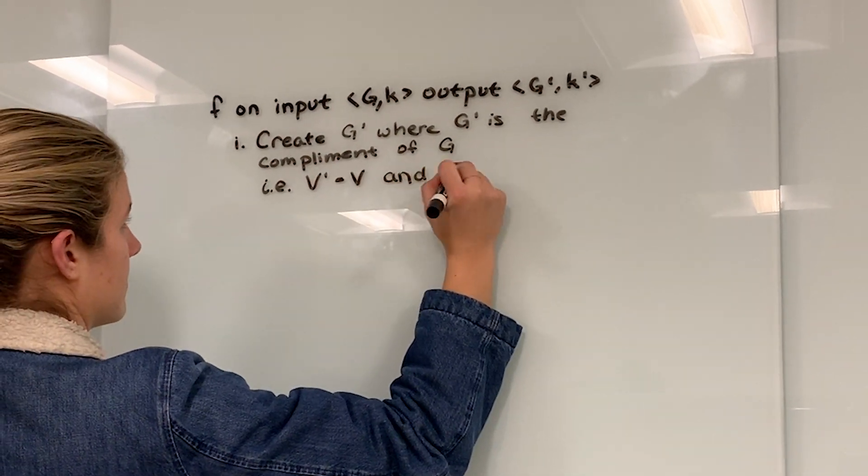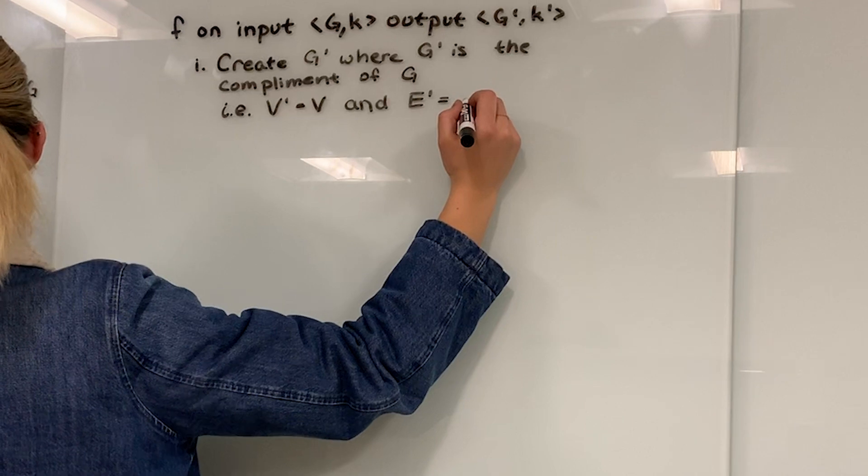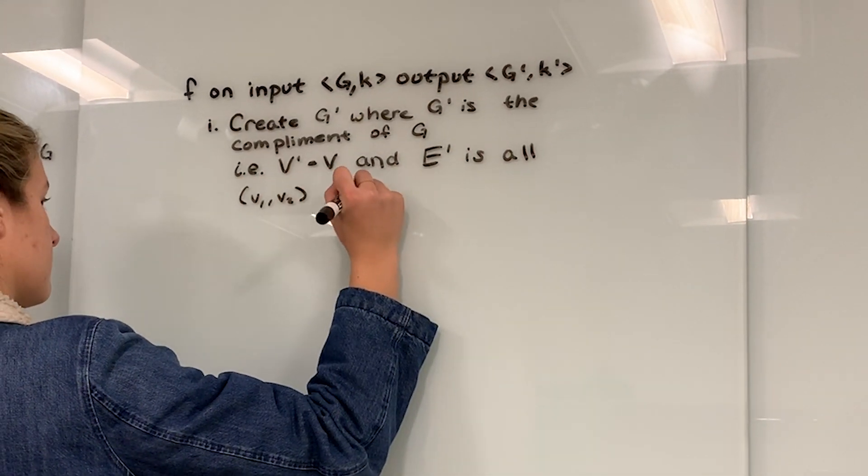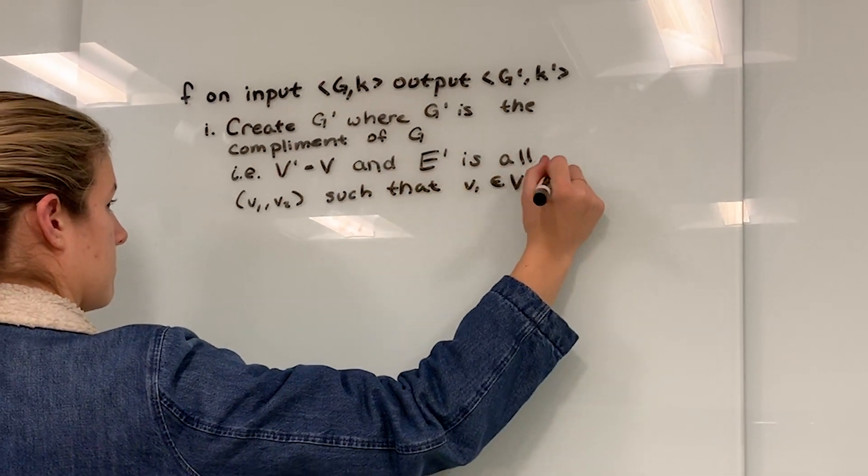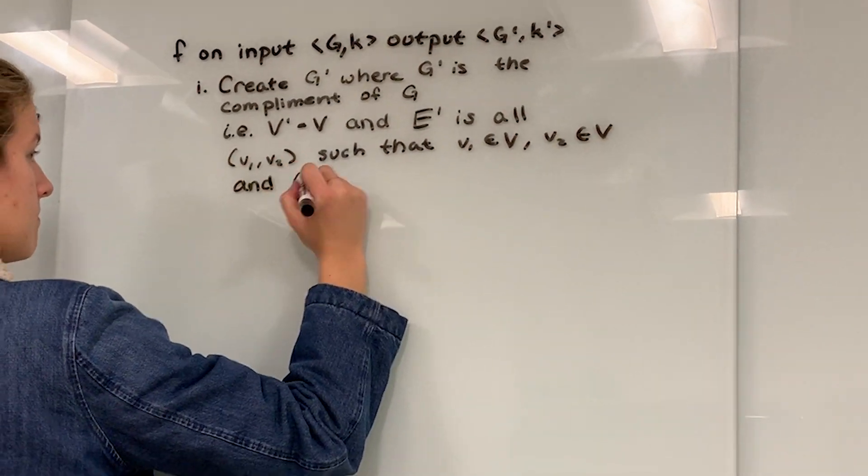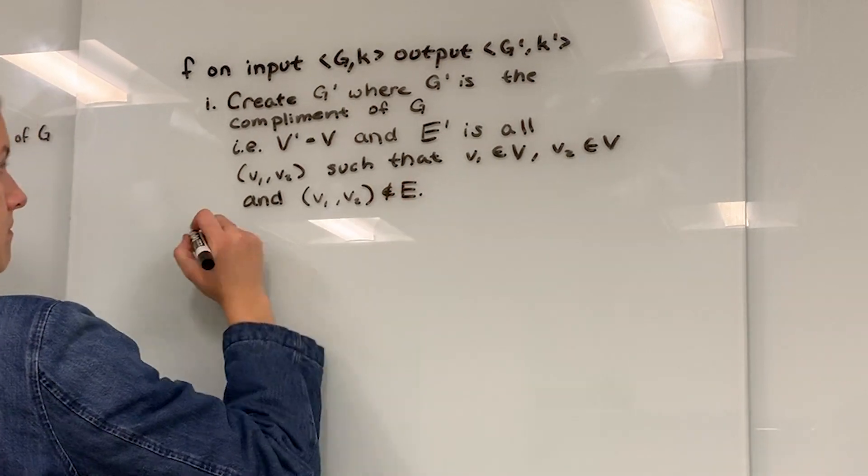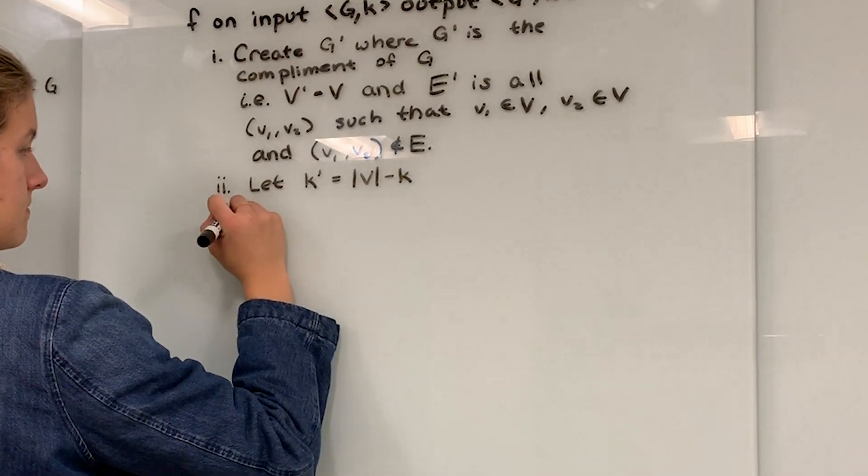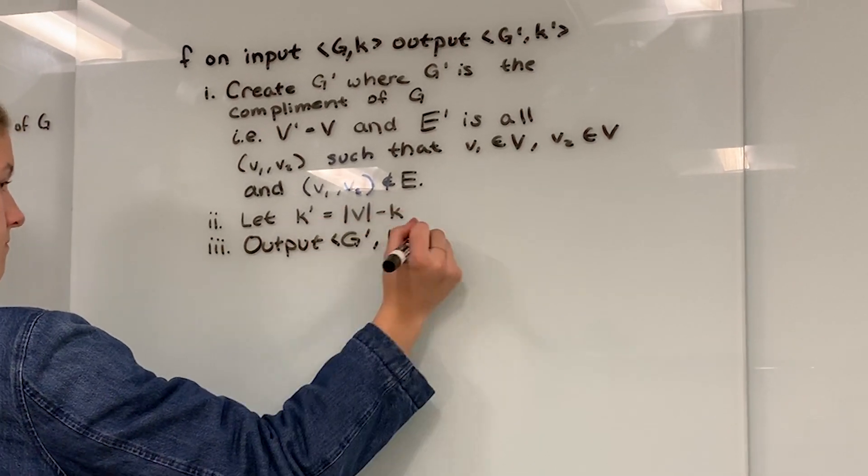Create G' where G' is the complement graph of G. So the vertices are the same, and the edges are all edges that don't exist in the original edge set. Let K' be the size of all the vertices minus the original K from clique. Output G' and K'.